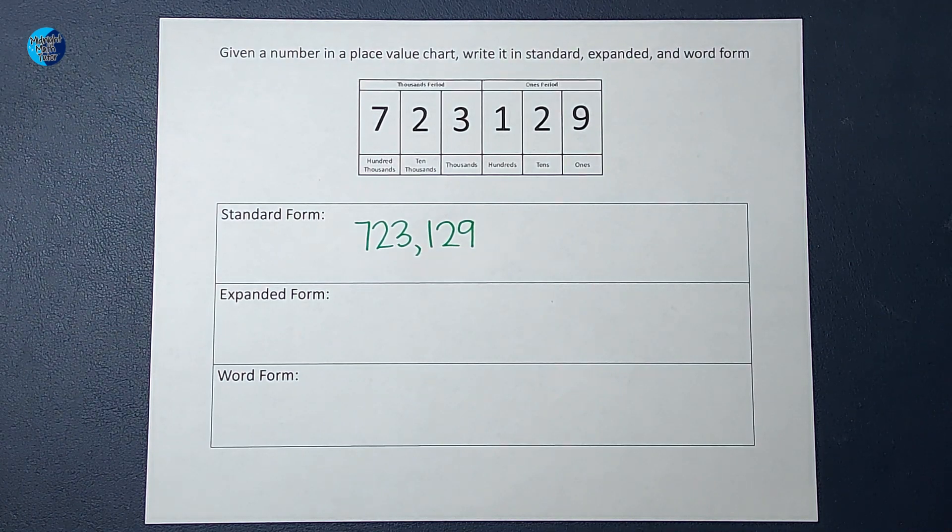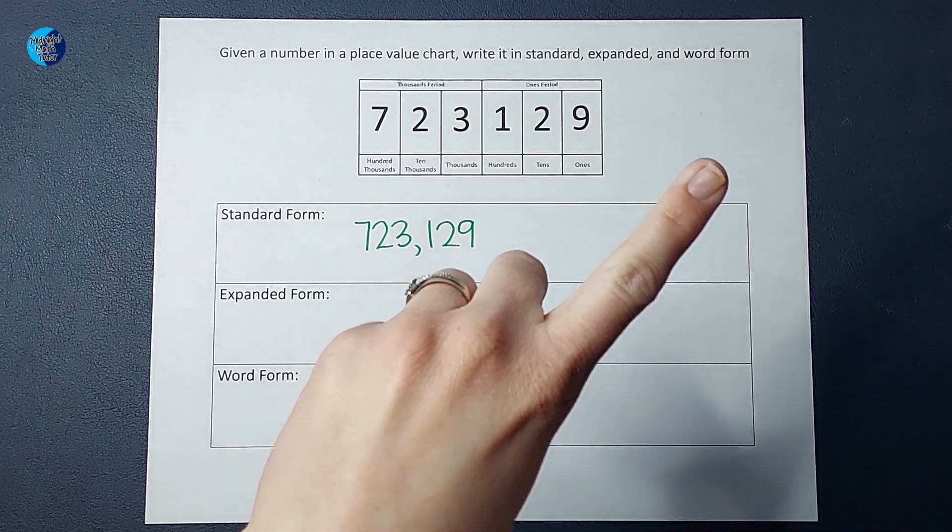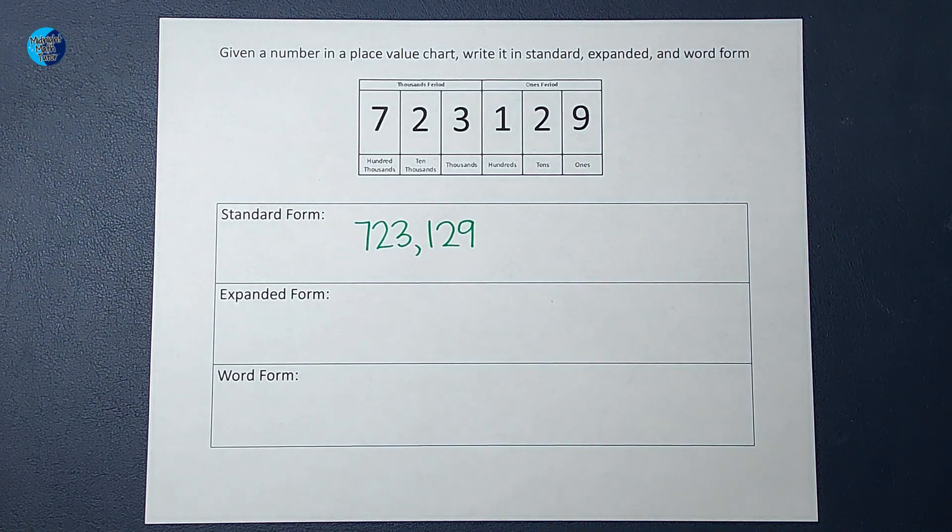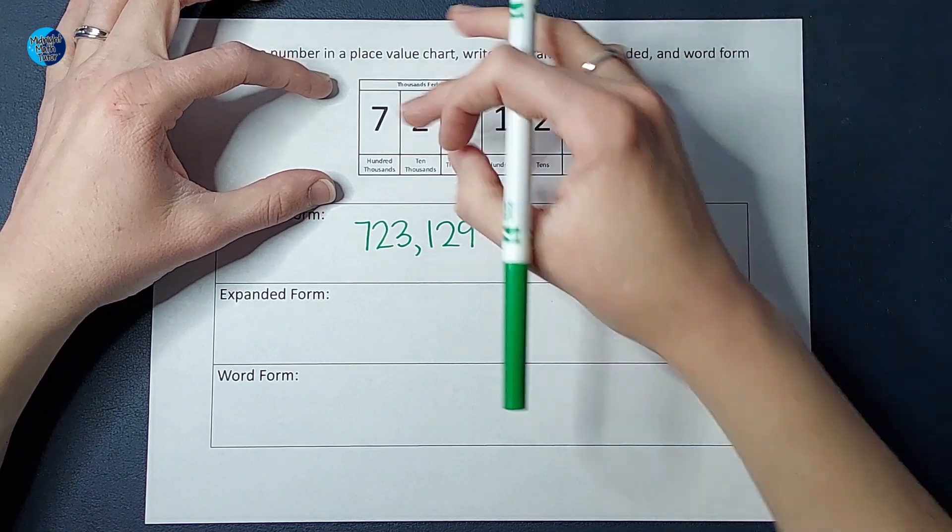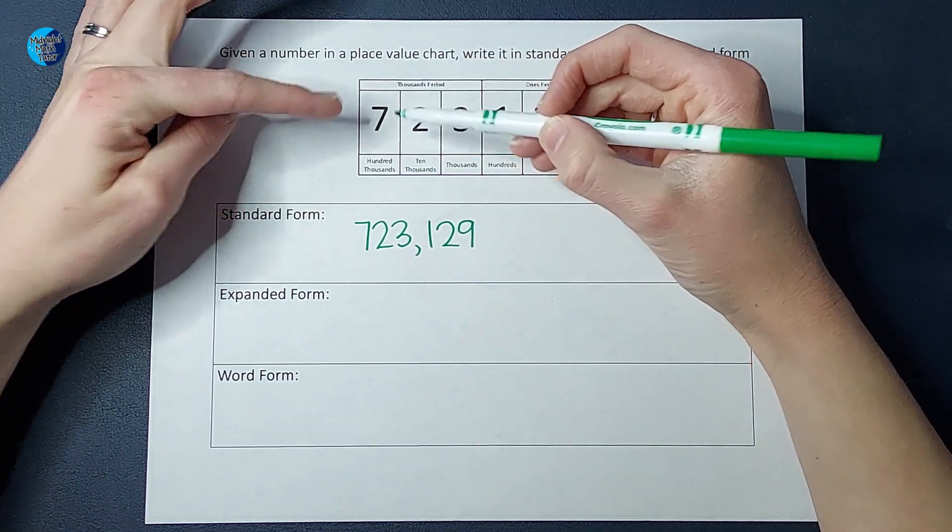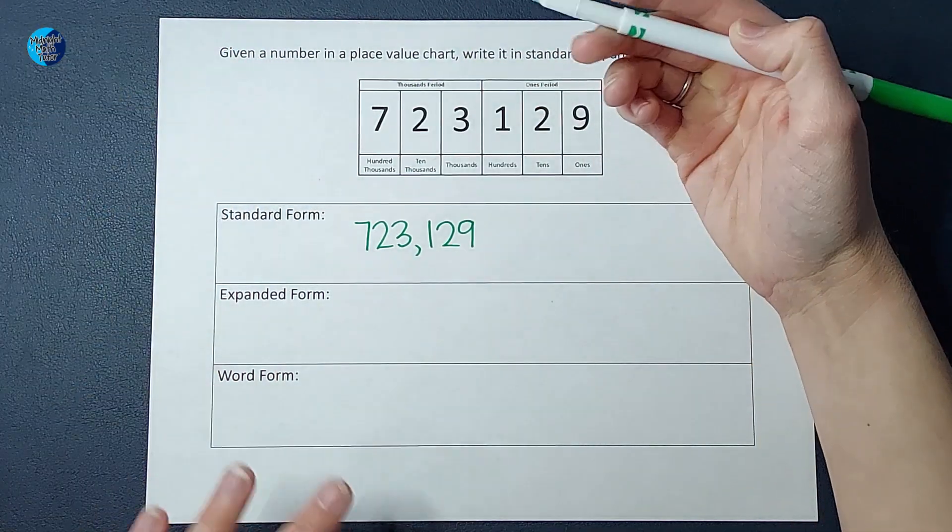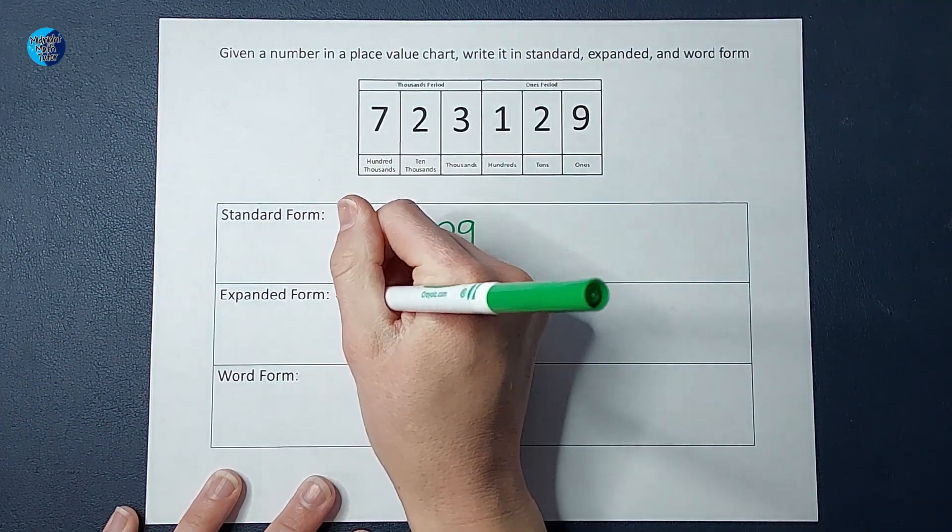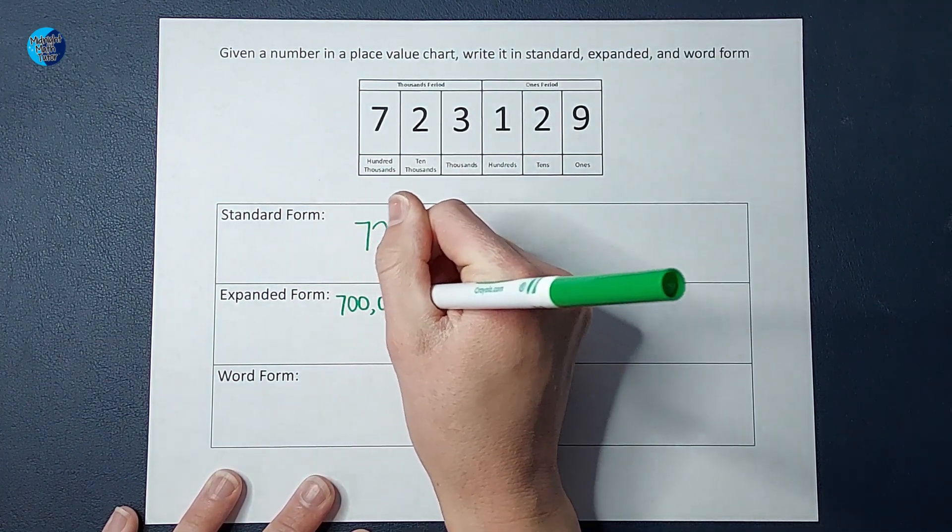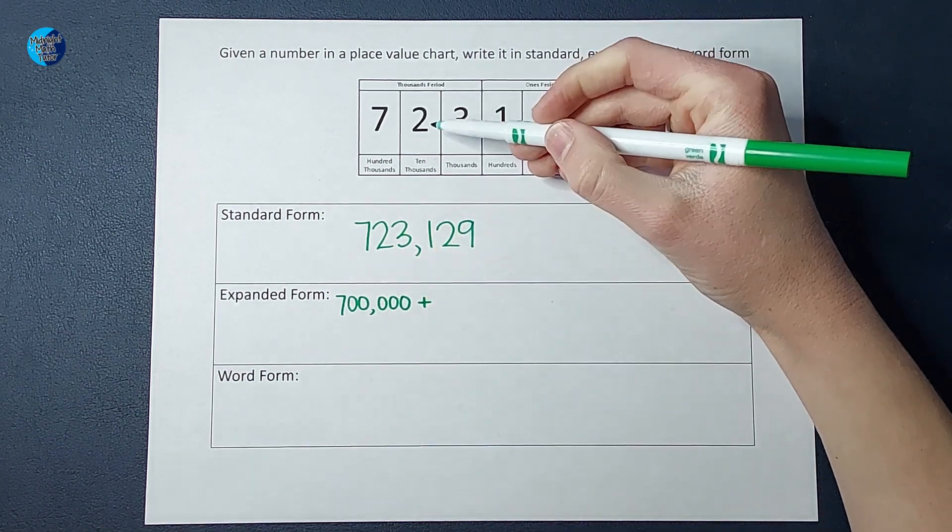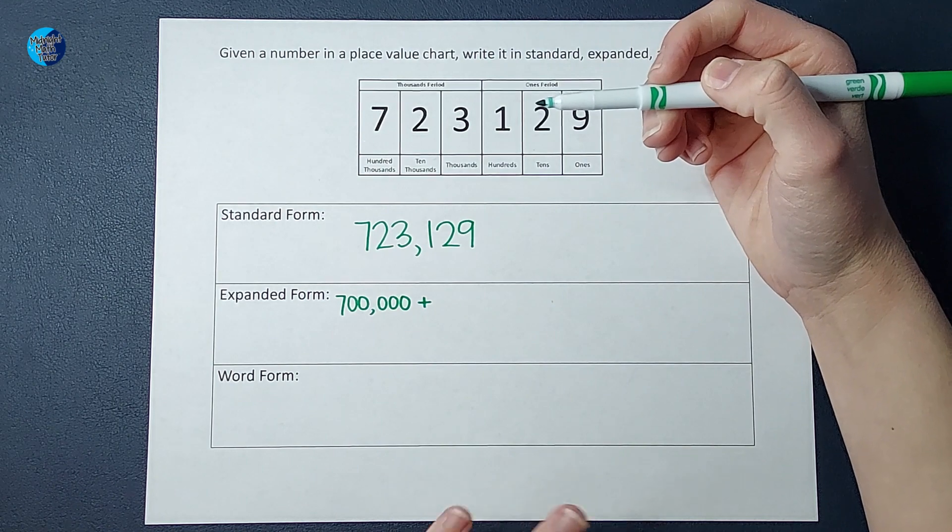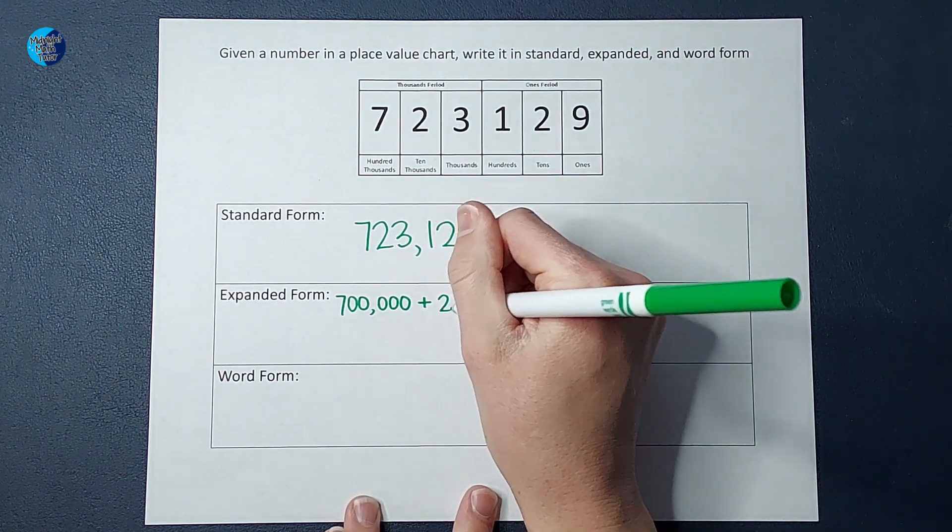Expanded form is breaking them apart by place value. If your student is still struggling with place value, I'll link a video for you in the corner you can go check out. But this chart really helps us understand what the place value is. This seven means I have 700,000s, which I would write as 700,000. Plus, this two means I have two 10,000s, which I would also write as 20,000.